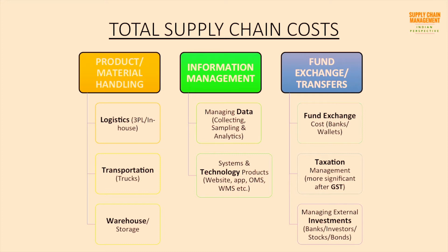On the fund management front, the first spend is a fixed percent payment to banks and wallets on every transaction with a customer. Second is the spend on tax-related payments, which has become more important after GST. The third example is the spend in managing input money supply from external investors or banks. For all these purposes, the company needs trained CAs, finance people, and lawyers, which is also a spend.